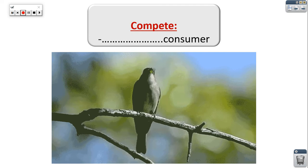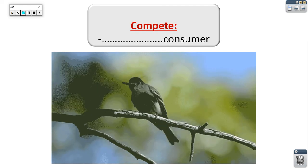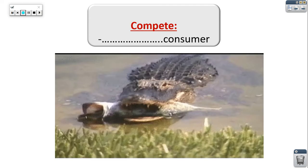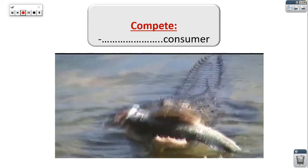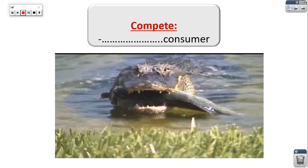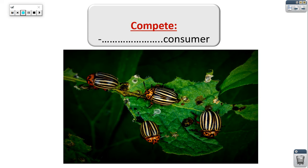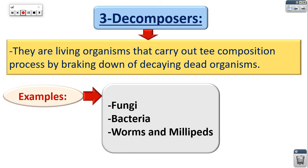Can you tell me what type of consumer this is? Very good — secondary consumer, because it feeds on a primary consumer. And what is this? Tertiary, because it feeds on a secondary consumer. And what is this? Primary consumer, because it feeds on plants. Producers are living organisms that can make their own food, and plants are the only example.